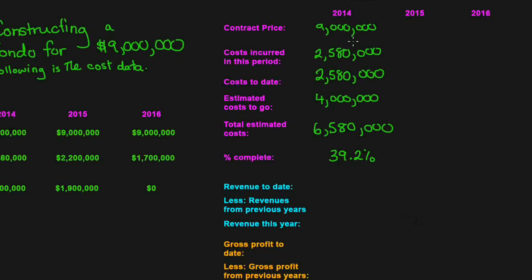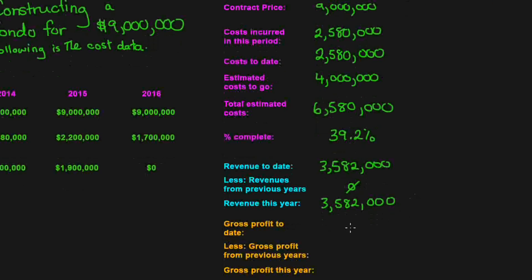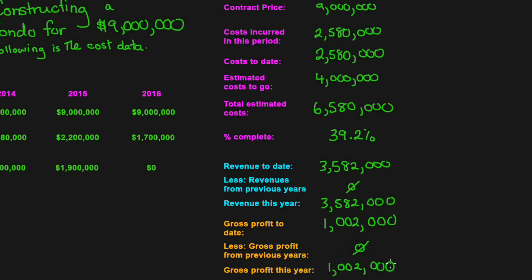We multiply thirty-nine point two percent by nine million, which gives us three million five hundred and eighty-two thousand in revenue to date. Revenue from the previous year is zero since we just started, so revenue for this year is three million five hundred and eighty-two thousand. Gross profit to date is revenue minus cost: three point five eight two million minus two point five eight million equals one million two thousand dollars. Gross profit from the previous year is zero, so gross profit this year is one million two thousand dollars.